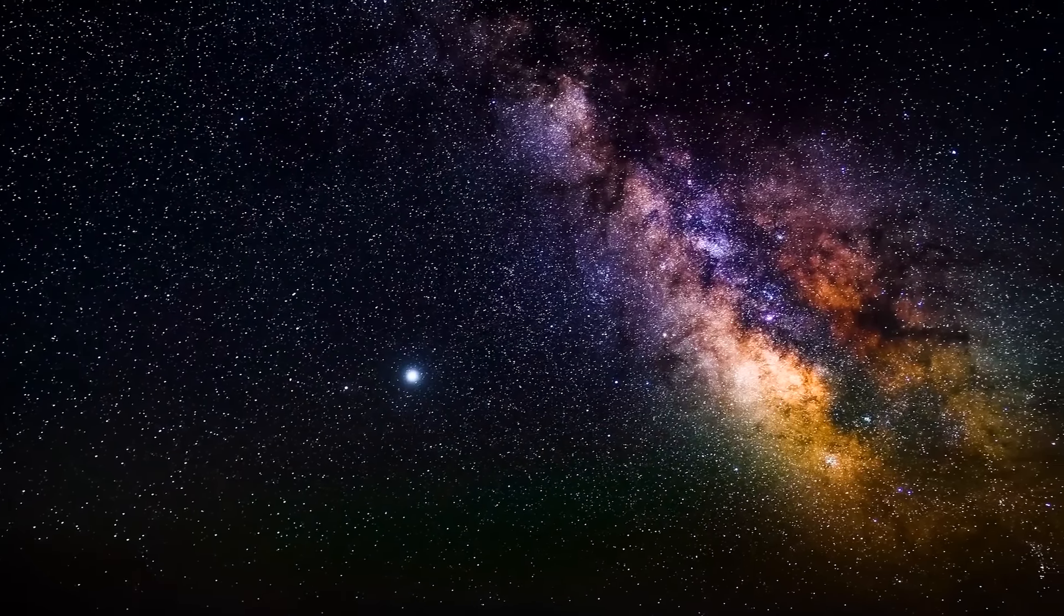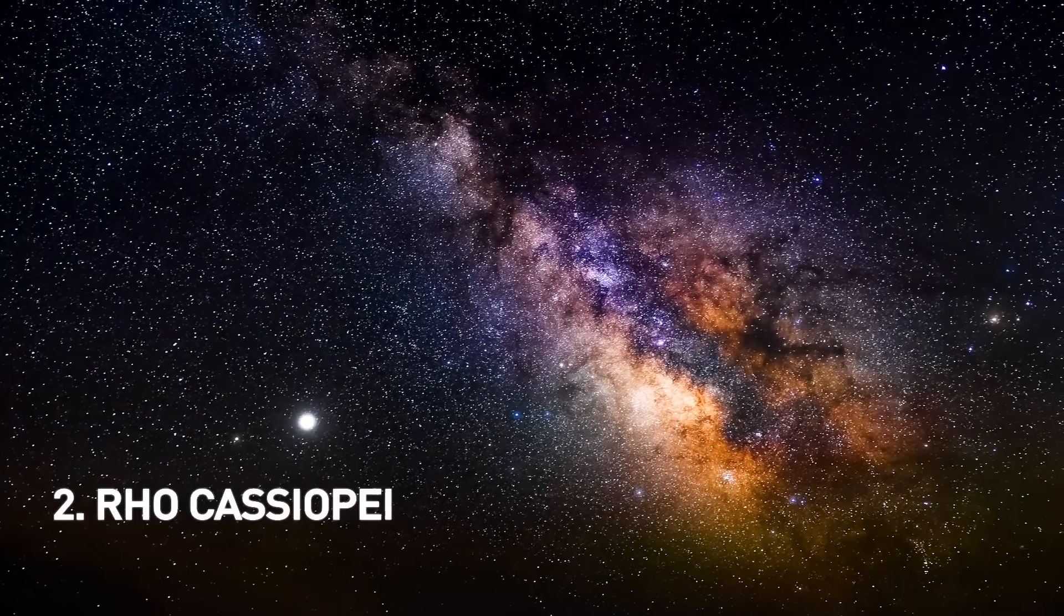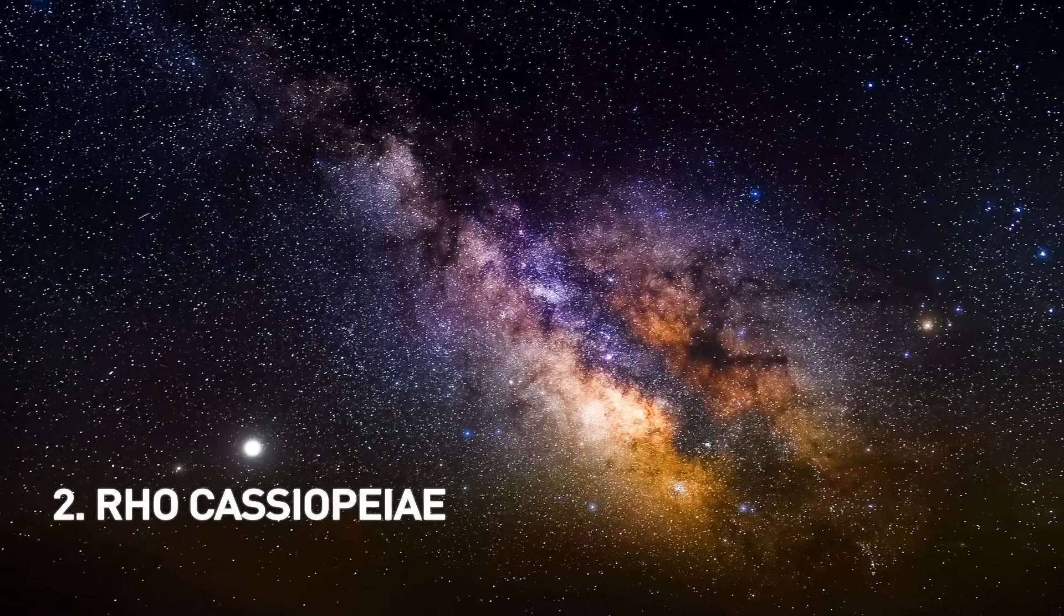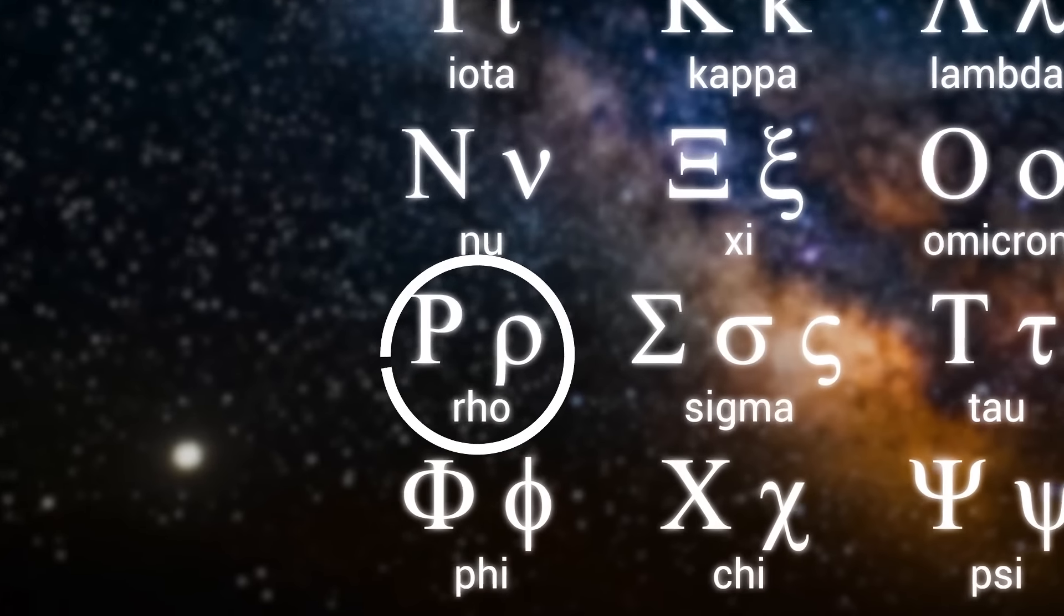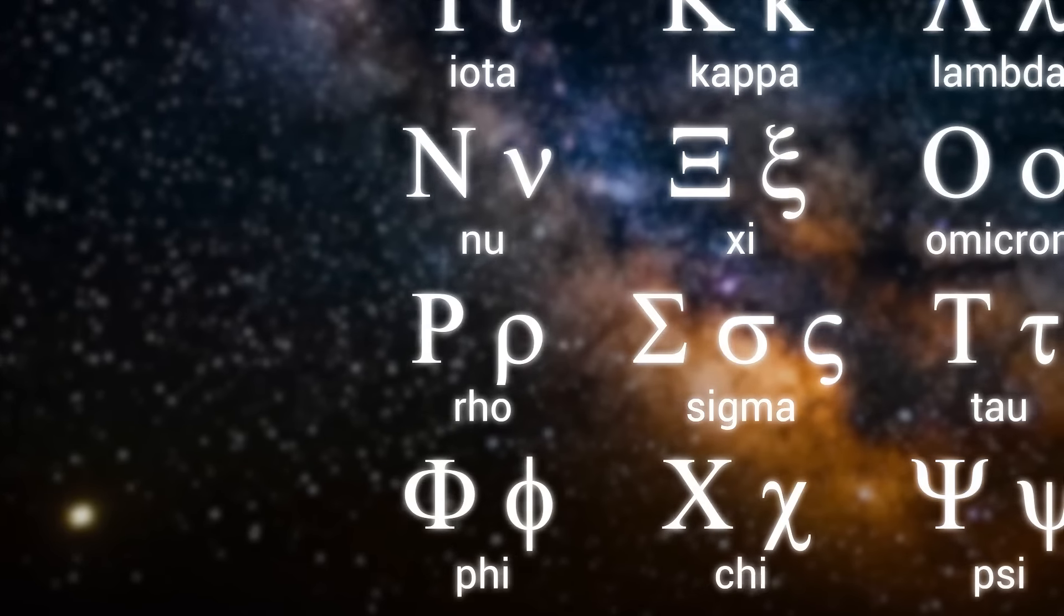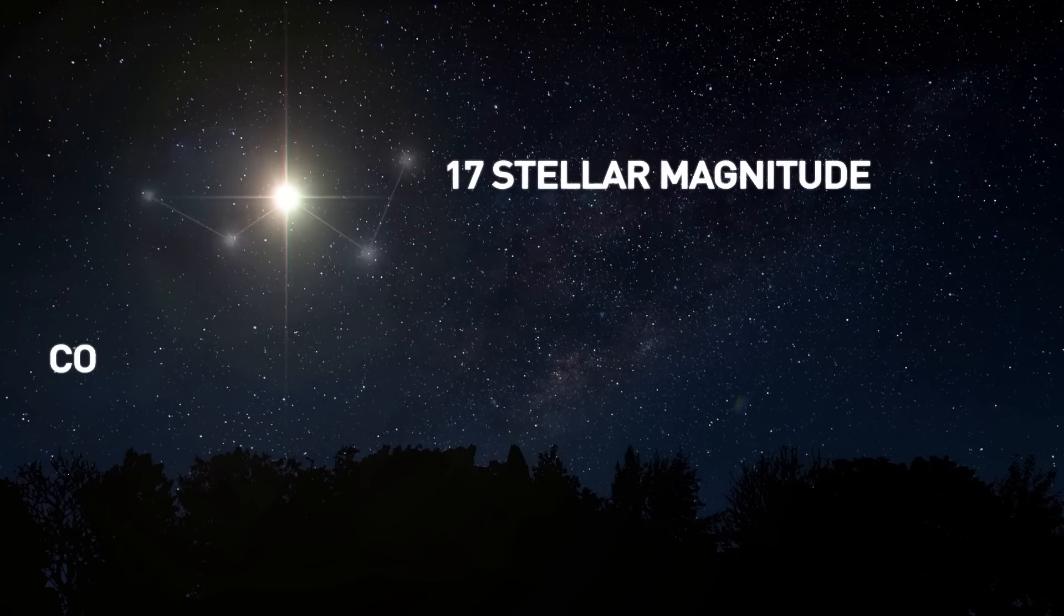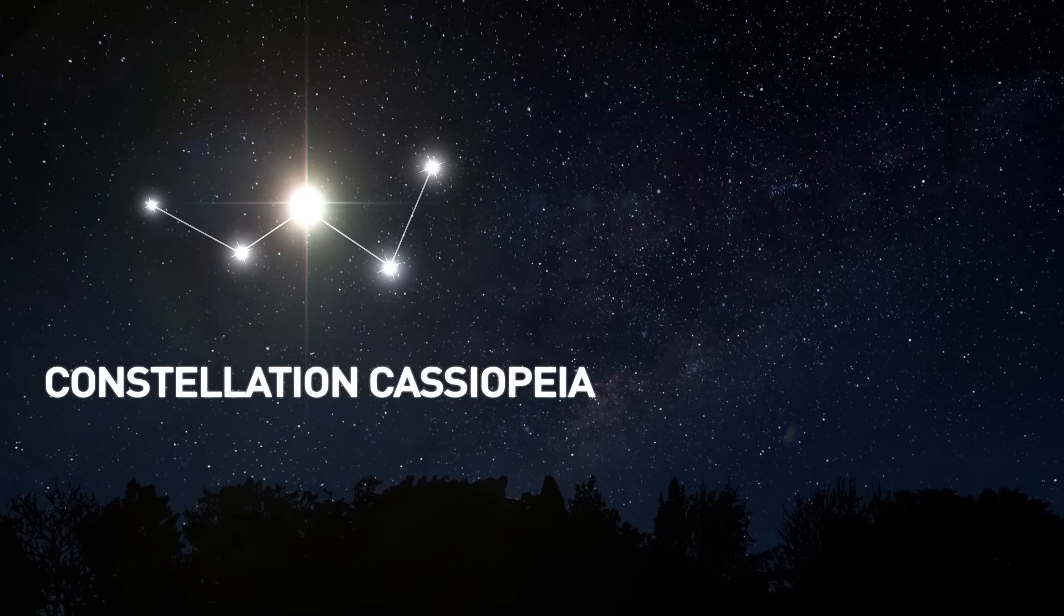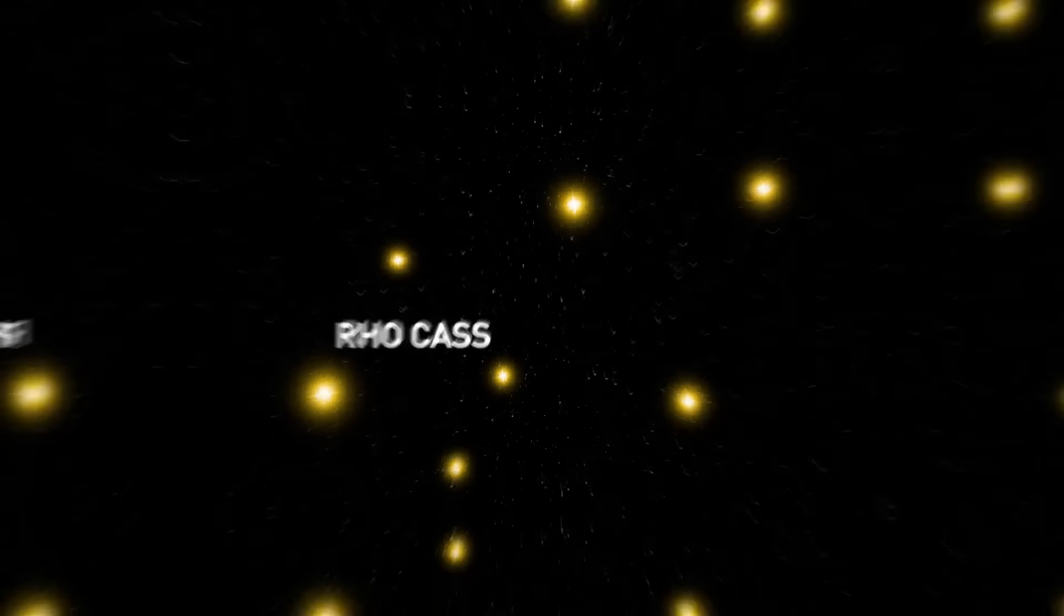Now, from a list of over 30 likely candidate stars that might go supernova, Rho Cassiopeia is many astronomers' choice. Another Greek letter, Rho, is the 17th letter in the Greek alphabet. It means that Rho Cassiopeia is the star with the 17th brightest apparent magnitude in the constellation Cassiopeia. Yet, Rho Cass, a nickname, is only one of 7 known yellow hypergiant stars in the Milky Way.